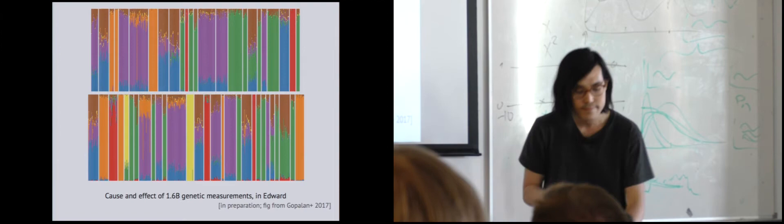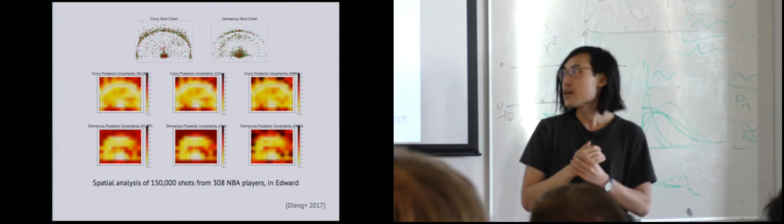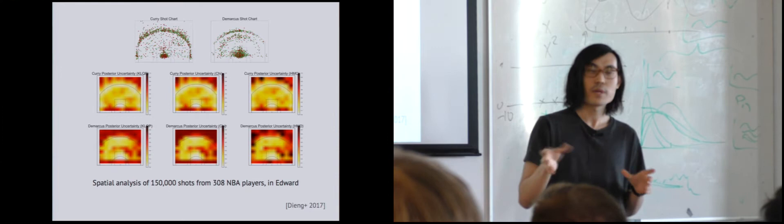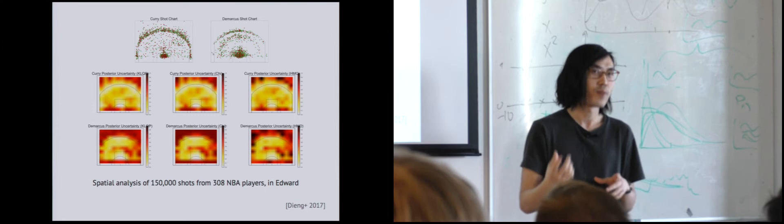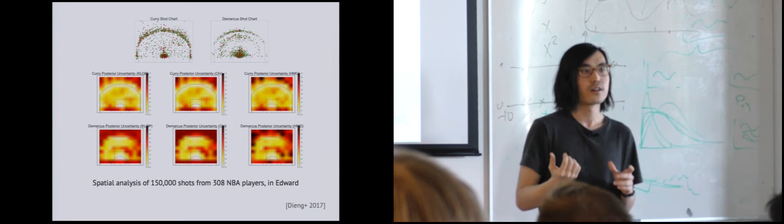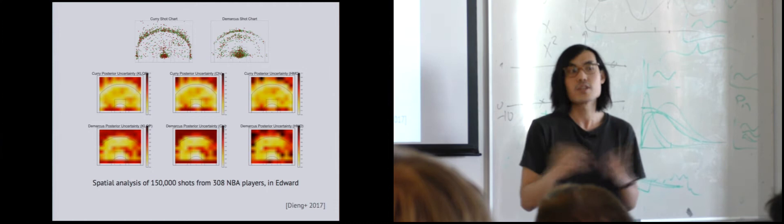The last application uses a Cox process, which is a Gaussian process with a Poisson likelihood. Here we're using it to do spatial analysis of basketball data. The dataset has a bunch of different shot locations for NBA players — collected from Andrew Miller from Ryan Adams' group. This dataset is individual points on the basketball court, and you're trying to analyze where NBA players are most likely to make good shots. There are two specific players: Stephen Curry and Demarcus. By exploring different inference algorithms, you can understand the posterior uncertainty with respect to how well they would make certain shots.